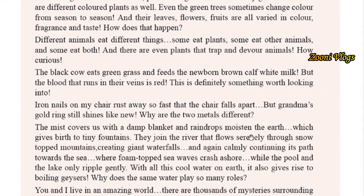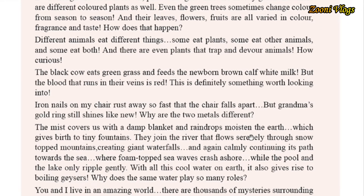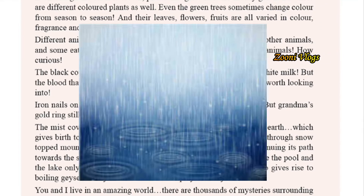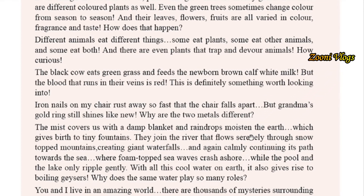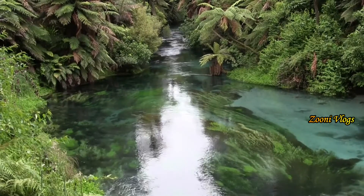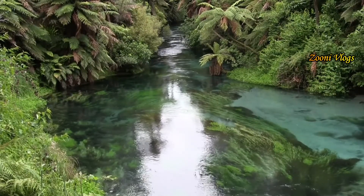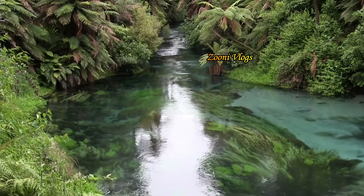The mist covers us like a damp blanket, and raindrops moisten the earth which gives birth to tiny fountains. When there is mist, we cannot see clearly to the other side, just like a damp blanket. Raindrops help to moisten the earth, which gives birth to tiny fountains that join the rivers flowing through snow-topped mountains, creating giant waterfalls.